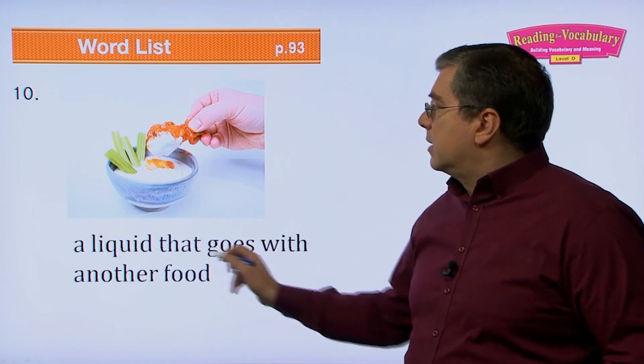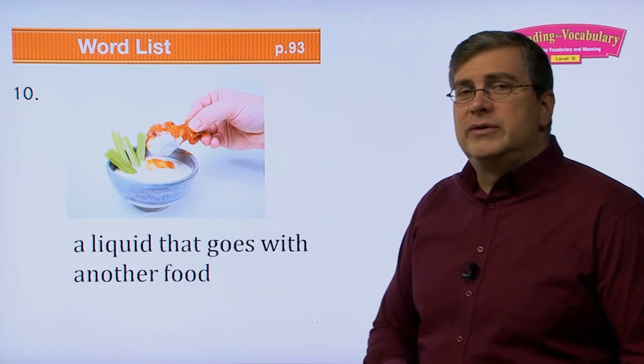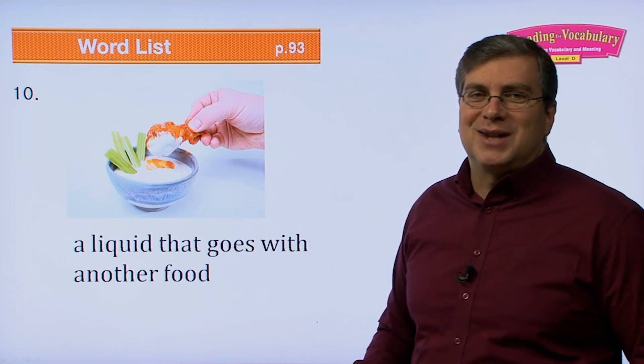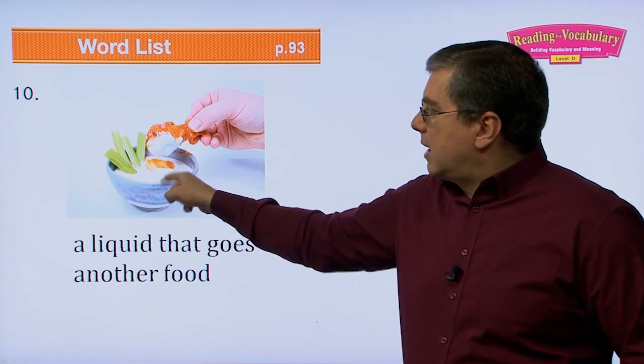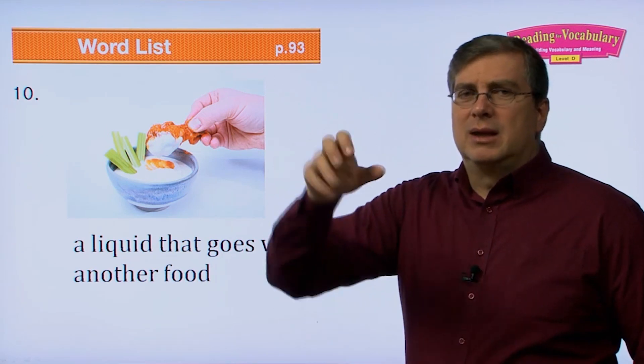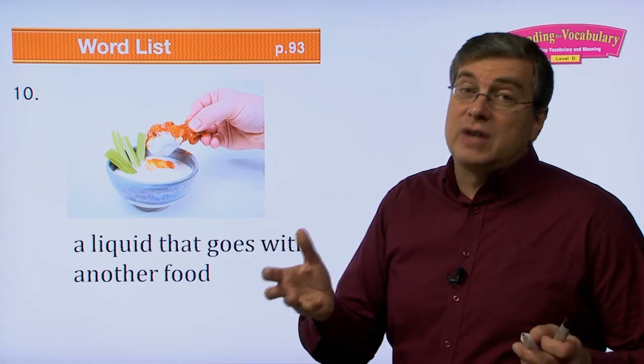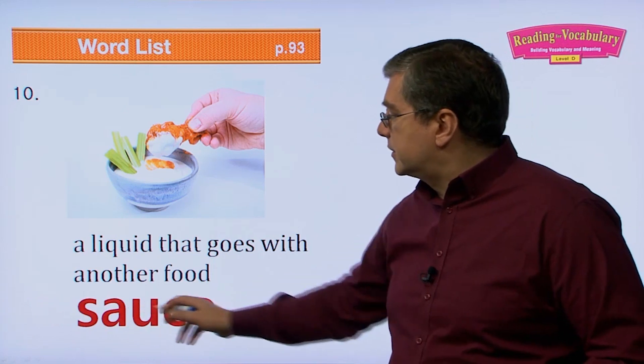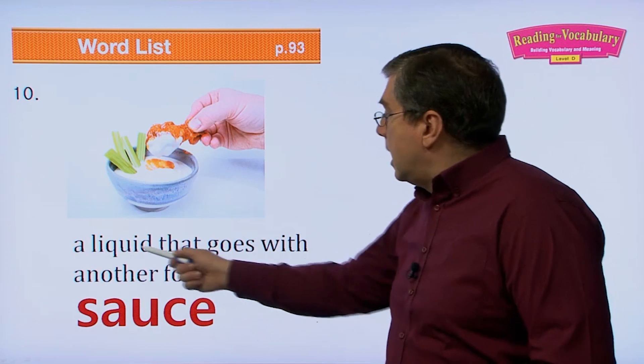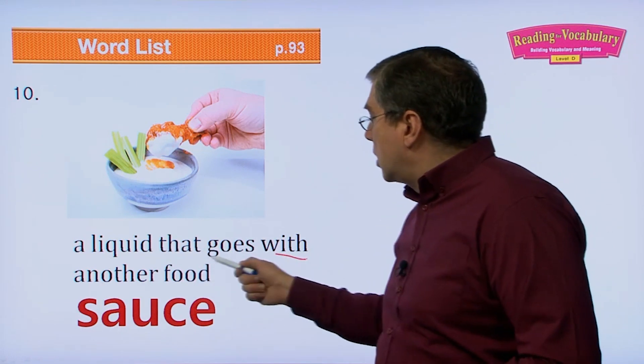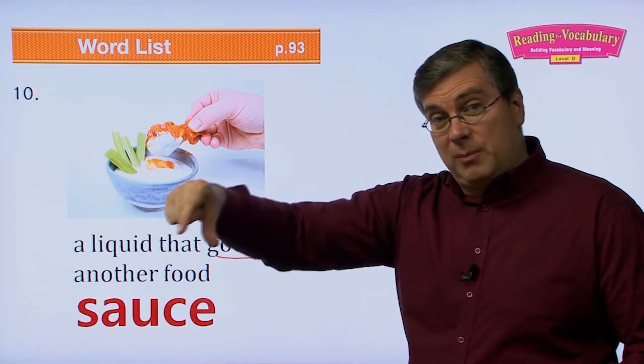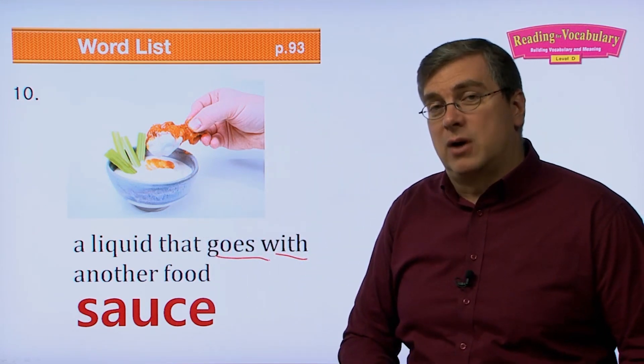A liquid that goes with another food. A lot of foods that you eat, especially if you go to a restaurant like TGI Fridays or some other place like that, and you have chicken wings, they usually have some other liquid. It's a very thick liquid. It's not like water, although some can be thin. It's called a sauce. Usually they're kind of thick and you dip your food into it. A liquid that goes with another food. So you either dip your liquid into it or you pour it on top of your meal. That of course is a sauce.